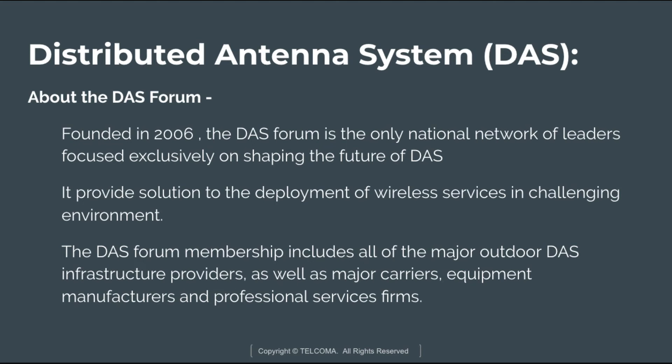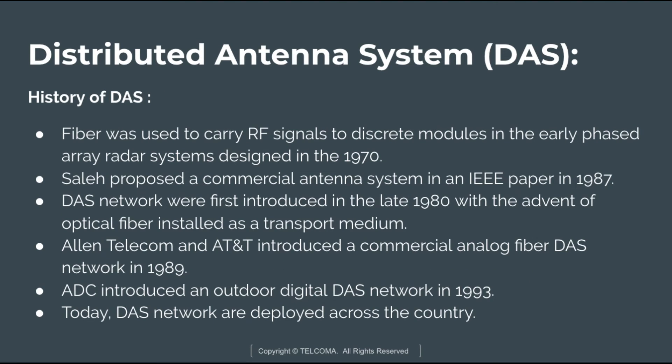The history of the distributed antenna system begins with fiber being used to carry RF signals to discrete modules in early phased array radar systems designed in the 1970s. A commercial antenna system was proposed in an IEEE paper in 1987. DAS networks were first introduced in the late 1980s with the advent of optical fiber as a transport medium. Allen Telecom and AT&T introduced a commercial analog fiber distributed antenna network in 1989, and ADC introduced an outdoor digital DAS network in 1993.